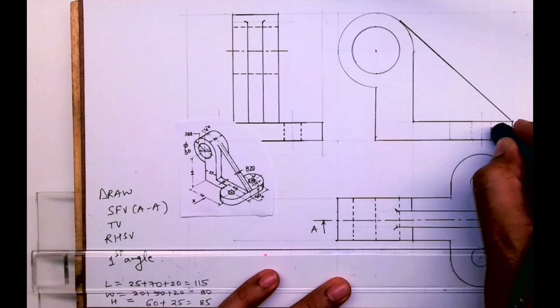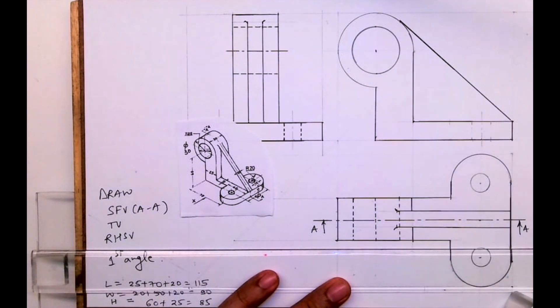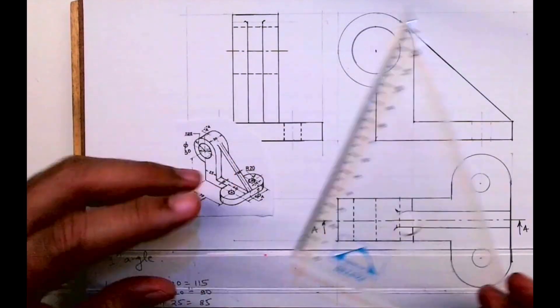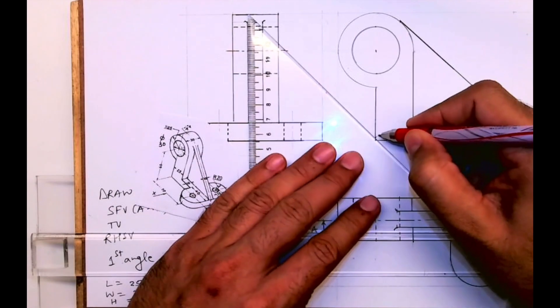So when it is getting cut, this dotted line will go away. This will go away. This rib won't be hatched. The entire portion will be hatched apart from that circle, because it's a hollow part.